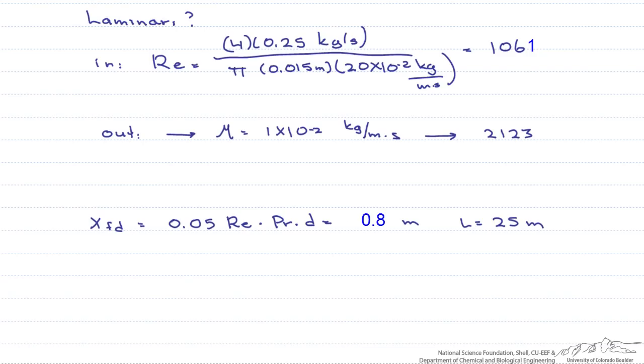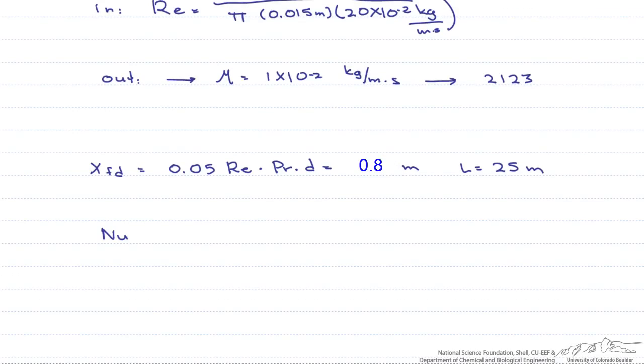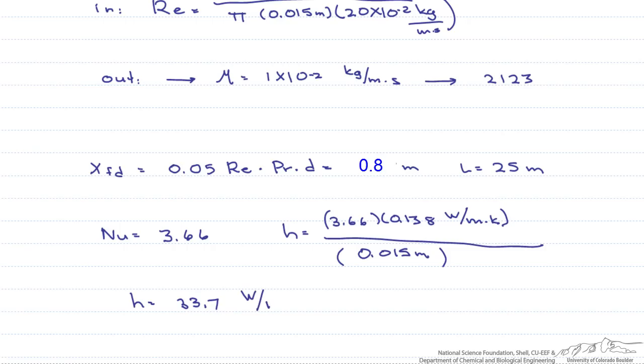Again, constant surface temperature, so that means that our Nusselt number is going to be 3.66. And so that will allow us to find our heat transfer coefficient, which is the Nusselt number times the thermal conductivity of the fluid divided by the diameter. And we end up with a convective heat transfer coefficient of 33.7 watts per meter squared Kelvin.